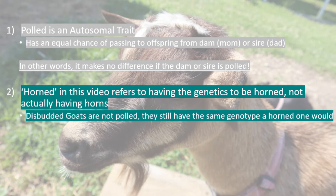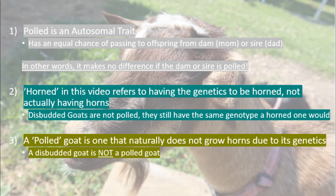Secondly, when I mention horned goats, I don't mean goats that actually have horns. The action of disbudding — which is burning the undeveloped horn bud in young goats — just eliminates the horns from growing. However, that does not make a goat polled. A goat is only considered polled if it naturally does not have horns due to its genotype or its genetics.